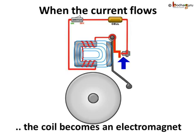Right now, the clapper is in contact with the screw. So, the circuit is complete and the current flows through the coil. Due to the current flow, the coil becomes an electromagnet.